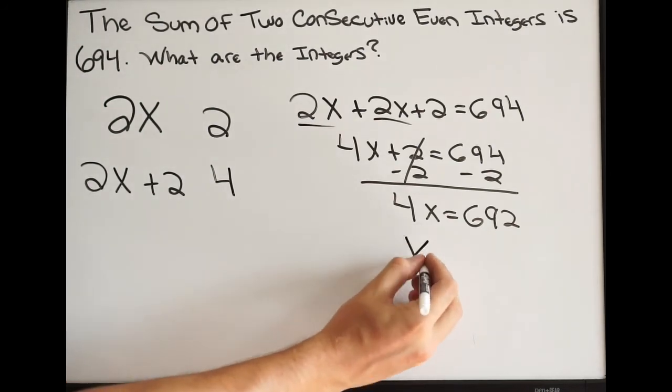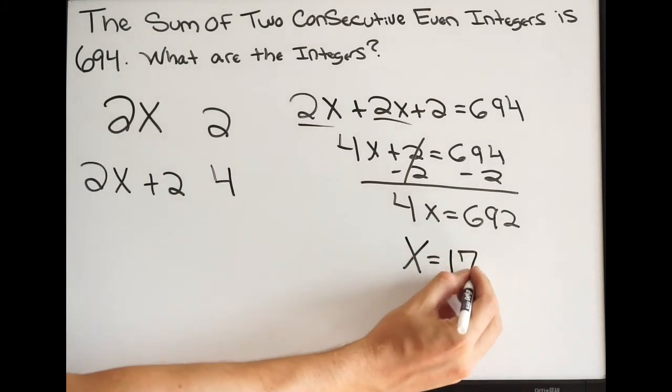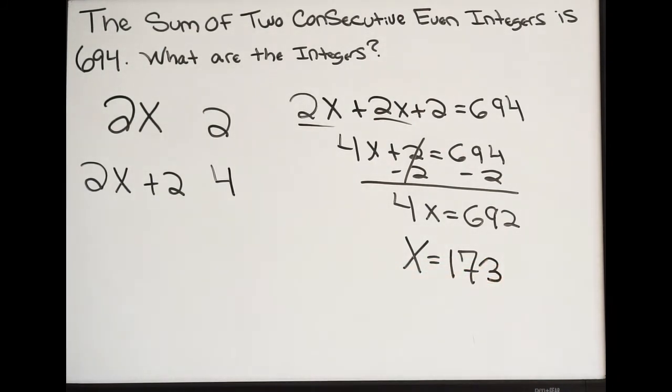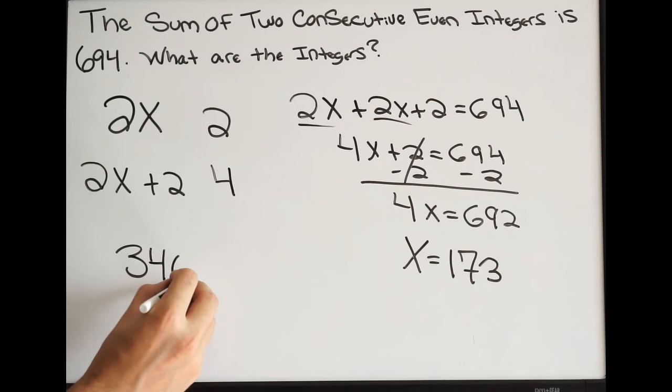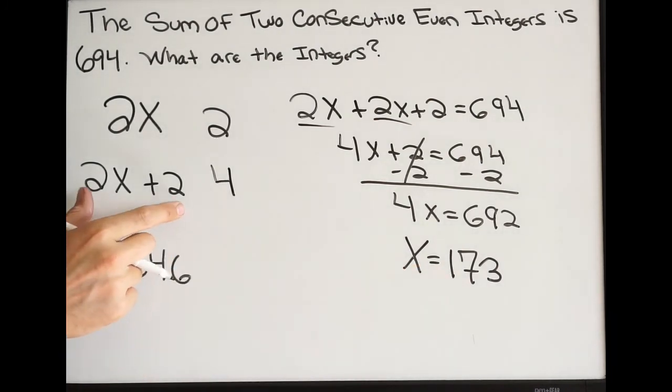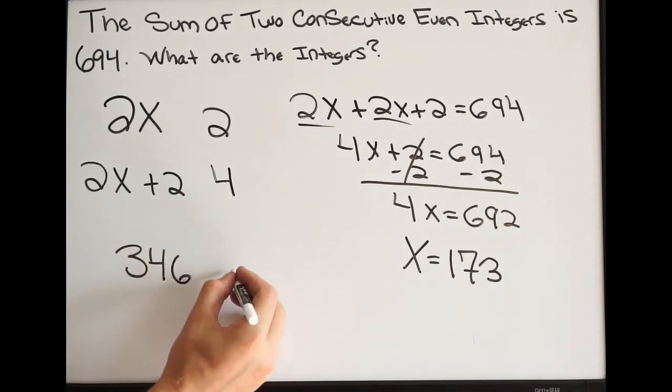Now again, this is not your answer. But x is equal to 173. So what we do at this point is we go to the two expressions that we came up with and we simply plug this in. So 173 times 2. So when we do that out, we get 346. So there's our first integer. And if you plug 173 in to your second expression, you're going to get 348.